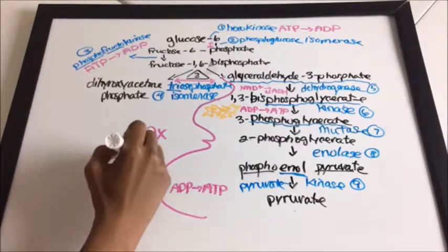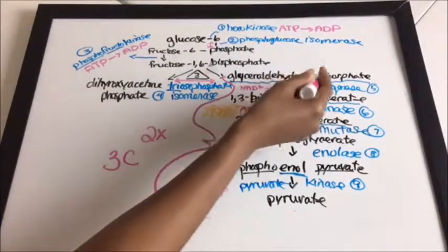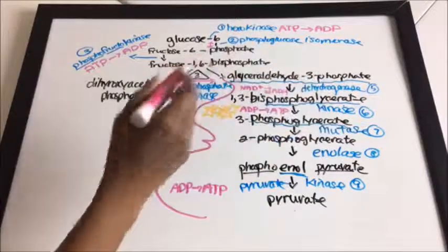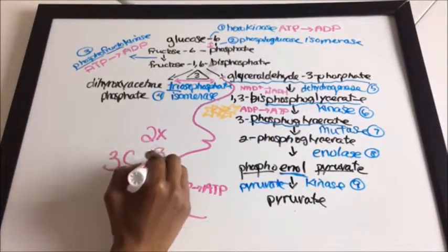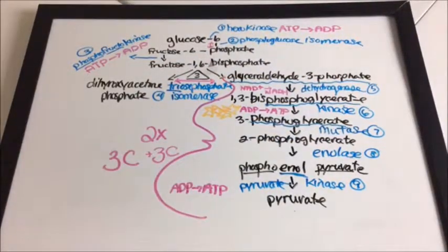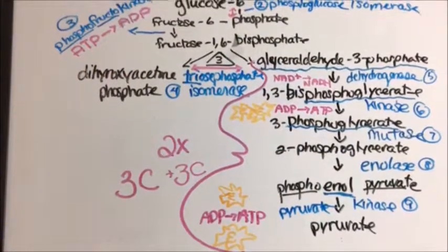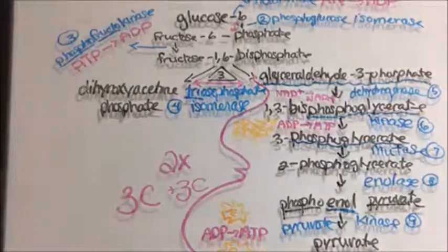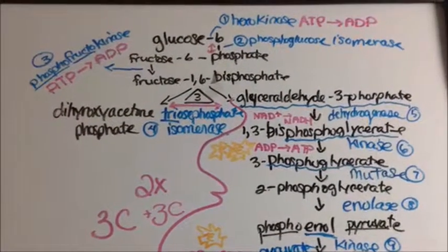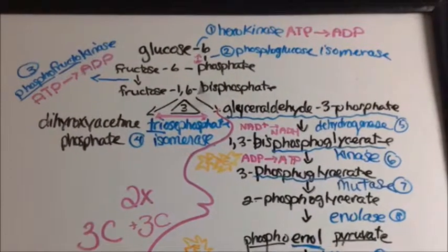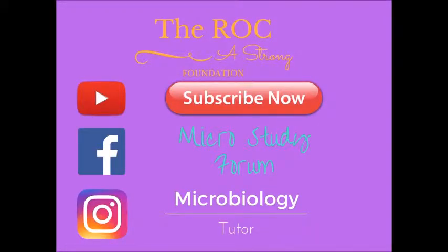Remember that all of this happens twice, because there are two three-carbon molecules — the dihydroxyacetone phosphate and glyceraldehyde-3-phosphate.